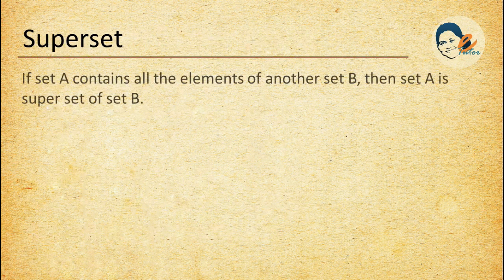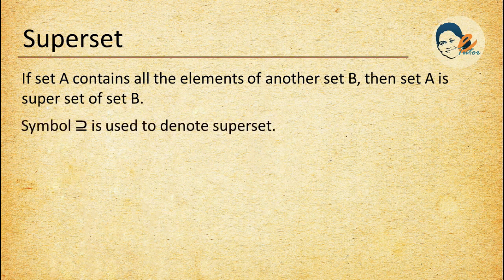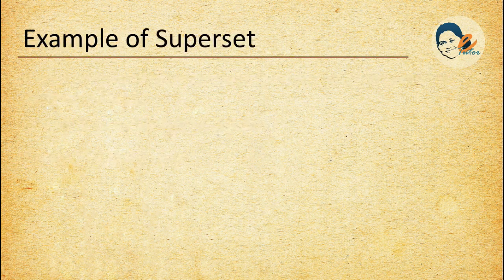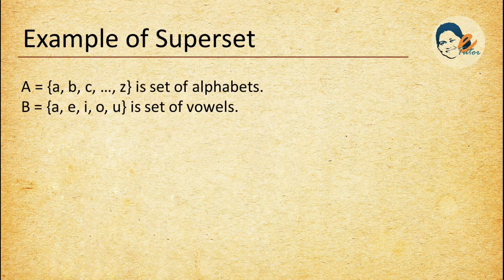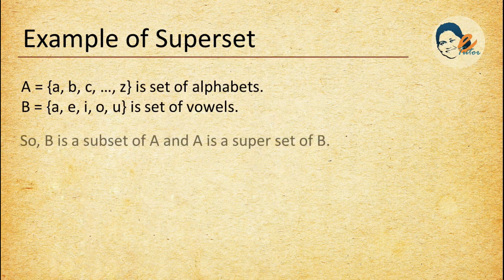Superset: if set A contains all the elements of another set B, then set A is a superset of set B. This symbol denotes 'is a superset of'. Example: if set A is the set of alphabets and set B is the set of vowels, then B is a subset of set A and A is a superset of set B.